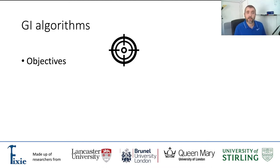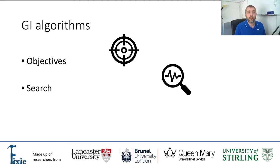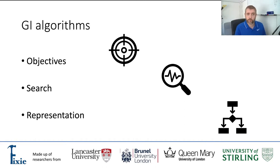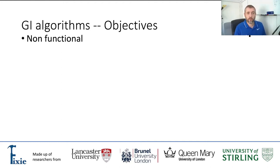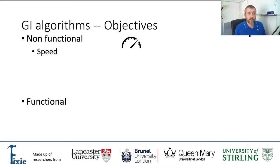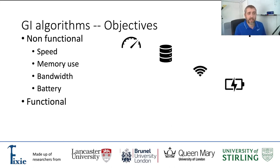The objectives guide the algorithms to what solution is best, or at least better than the others, and the search for those solutions and how we represent solutions in that search. So let's start with the objectives. In GI, objectives are generally divided into two groups: non-functional and functional. The non-functional objectives aim to improve physical properties affected by the software, such as speed or execution time, memory usage, bandwidth, and battery drain, to name a few.